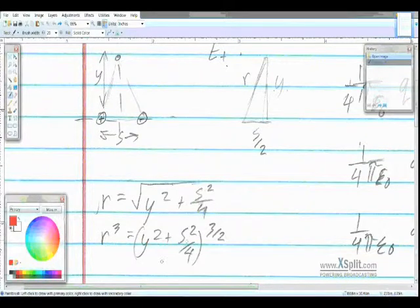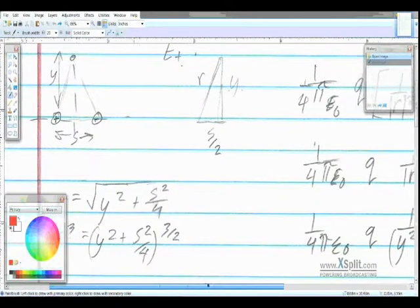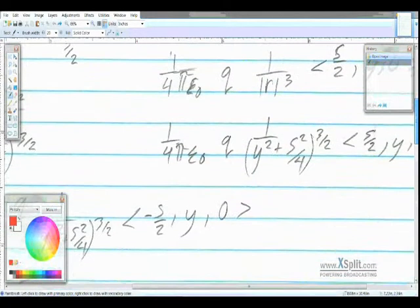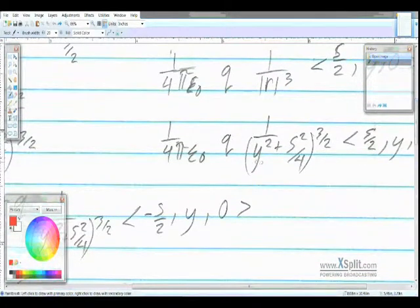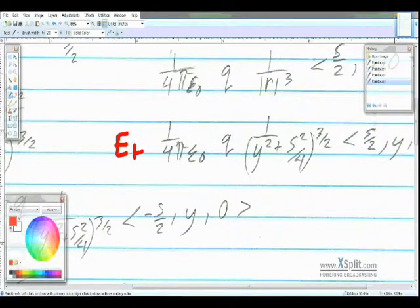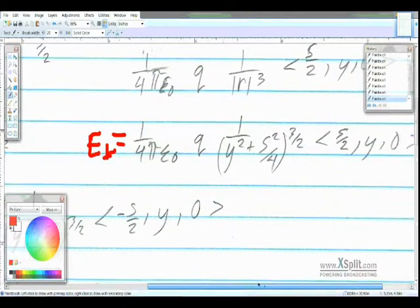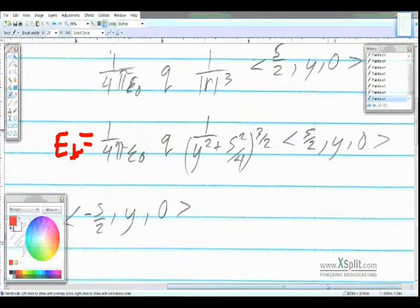So we need that r cubed here. See, it comes in handy to scroll over. Look at your r cubed. We plug in that r cubed, and we see that we get the electric field for the positive part of the dipole to be 1 over 4 pi epsilon naught times q times 1 over y squared plus s squared over 4 to the 3 halves, and we have our vector there.